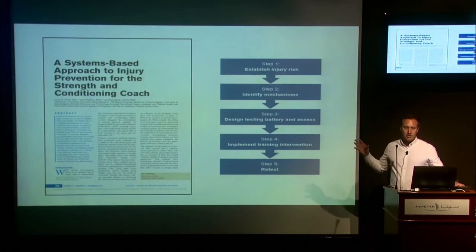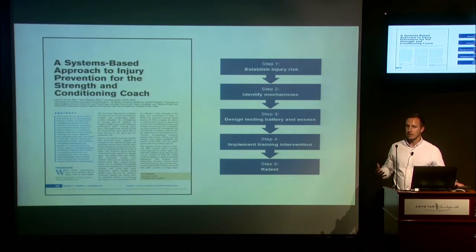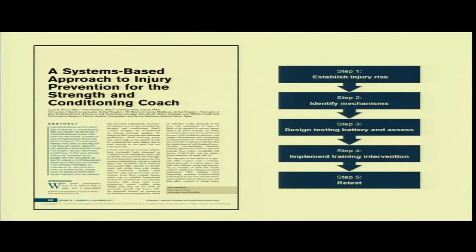I'm a systems guy, and to determine the effectiveness of our interventions we need to build a system. If we're going to devise a screen, the first thing we need to do is complete a real, thoughtful, clear needs analysis to determine the movement demands and the injury demands of the sport. From there we can identify mechanisms of injury, design a test battery, assess our athletes, implement a training intervention, and then retest to determine how effective our intervention is. That's going to be the basis of our discussion today and we'll revisit this model multiple times throughout the lecture.